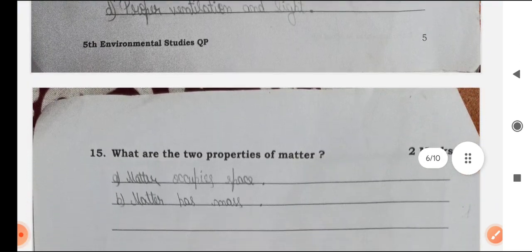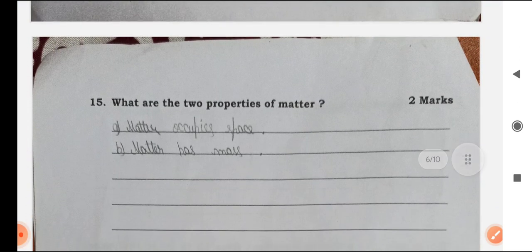What are the two properties of matter? Matter occupies space and matter has mass. These are the two properties of matter.